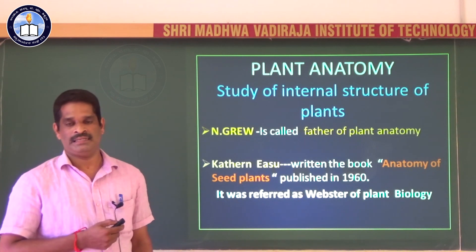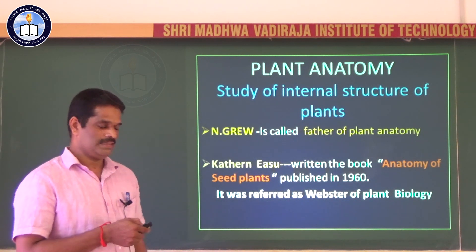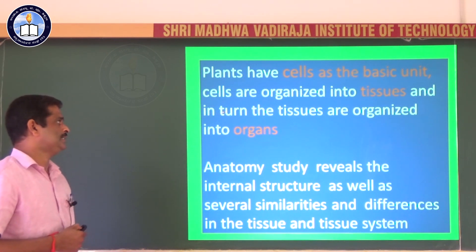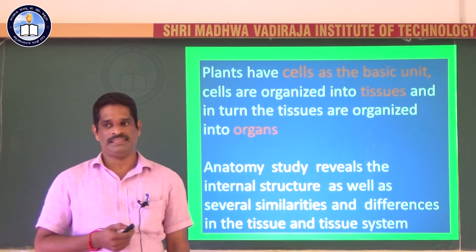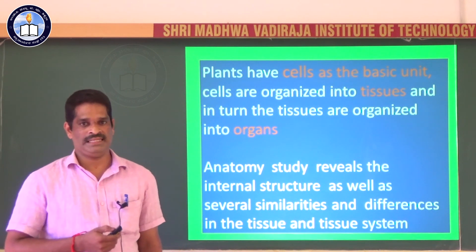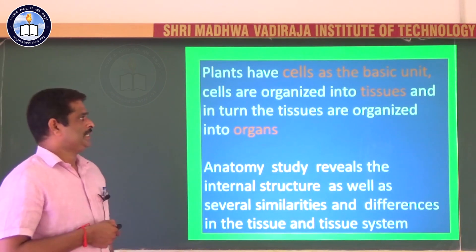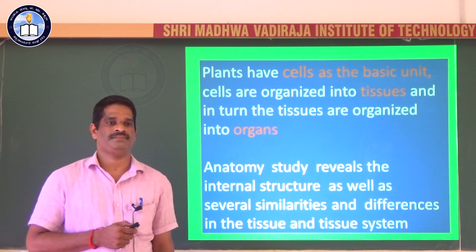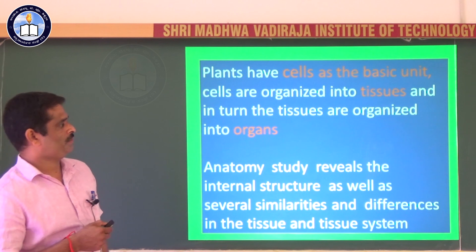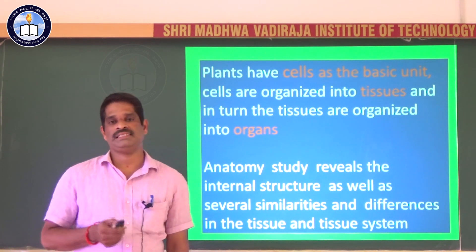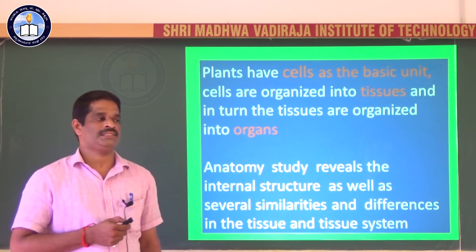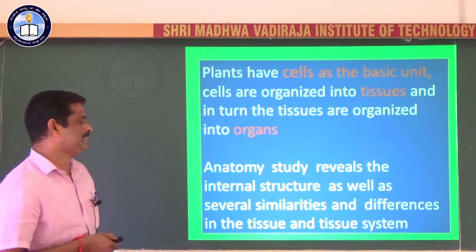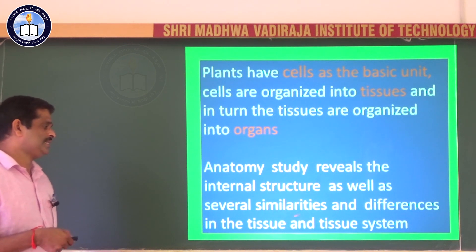The internal details of the plant reveal that the plant body is formed of cells as the basic unit. The cells are organized into tissues, and tissues in turn are organized into organs. So the plant body is formed of various organs — root, stem, leaves, etc. Different organs of the plant show differences in their internal structures. Within an angiosperm, dicot and monocot also seem to have different anatomical features.